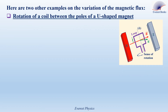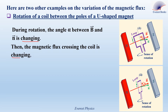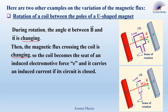Now we have two other examples on the variation of the magnetic flux. The first example is the rotation of a coil between the poles of a U-shaped magnet. During rotation, the angle alpha between B and N varies. Assume that at one instant the angle between B and N is alpha 1, and at another instant it is alpha 2. Since the angle alpha between B and N is changing, the magnetic flux crossing the coil is changing. Therefore, the coil becomes the seat of an induced electromotive force E, and the circuit carries an induced current if the circuit is closed.